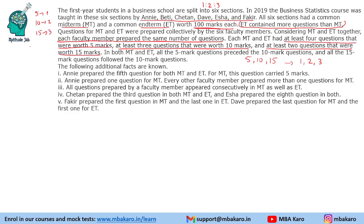Let us figure out how many questions we need. For 1-mark questions (representing 5-mark), the minimum is 4; for 2-mark questions (representing 10-mark), minimum is 3; and for 3-mark questions (representing 15-mark), minimum is 2. That gives us 9 questions and a total of 4 + 6 + 6 = 16 marks in our scaled units.